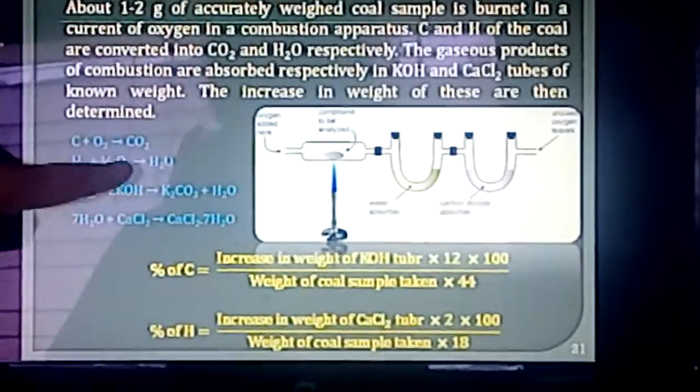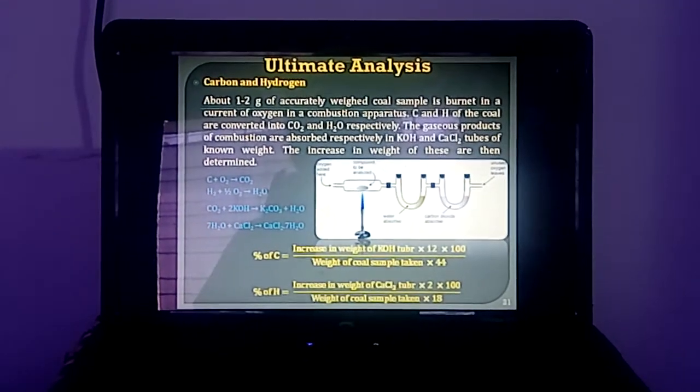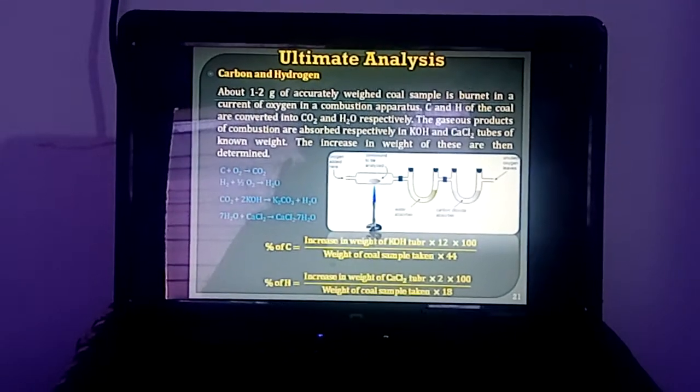This is the method to determine the carbon and hydrogen content present in the coal sample. I hope you understood the ultimate analysis of the coal. The first method covers carbon and hydrogen content — their reaction, procedure, and calculation. Based on the calculation, numerical problems mostly ask to determine the percentage of carbon and percentage of hydrogen. Thank you very much.